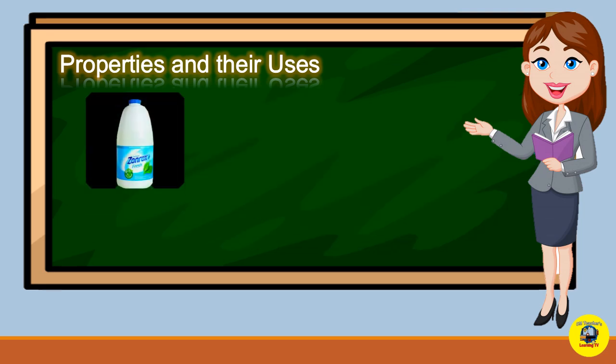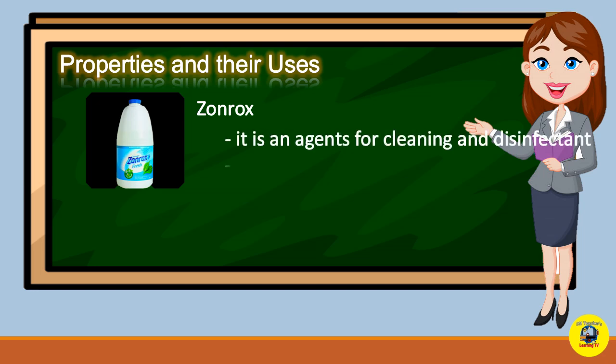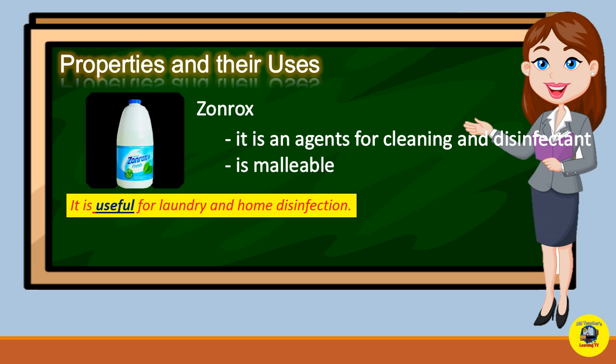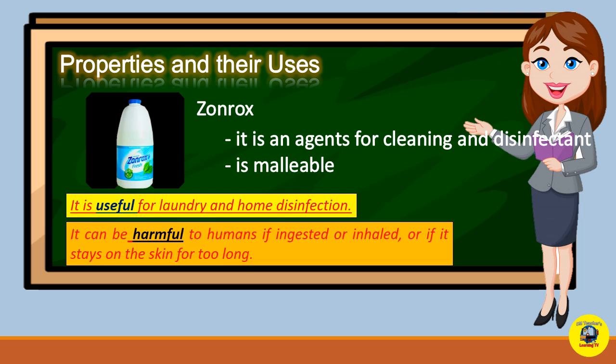Zonrex is an agent for cleaning and disinfection, and it is malleable. It is useful for laundry and home disinfection. But it can be harmful to humans if ingested or inhaled, or if it stays on the skin for too long.